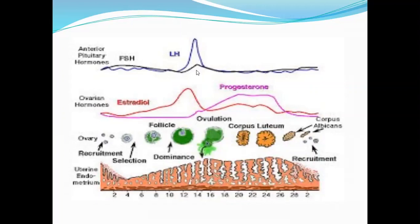As FSH increases, the luteinizing hormone levels also increase in anticipation of ovulation, wherein there is a rupture of the follicle releasing the ovum, which then goes to the uterine body where it will be fertilized. The ruptured follicle becomes the corpus luteum. The luteinizing hormone then goes back down.